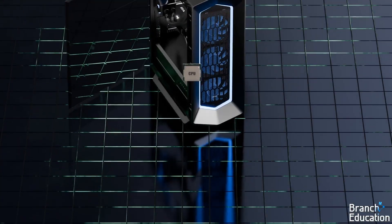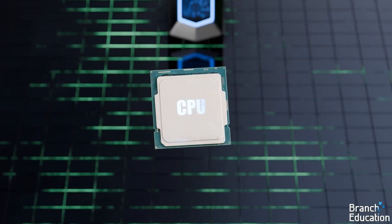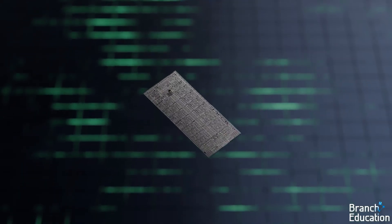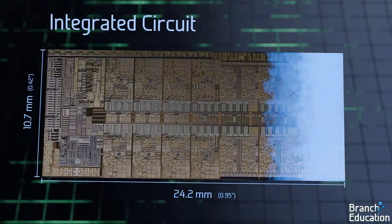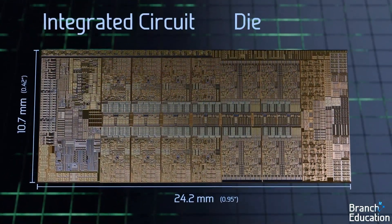Let's start by opening up this desktop computer, focusing on the CPU and taking a look at what's inside. Here we have an integrated circuit, or die, which we'll refer to as a chip.